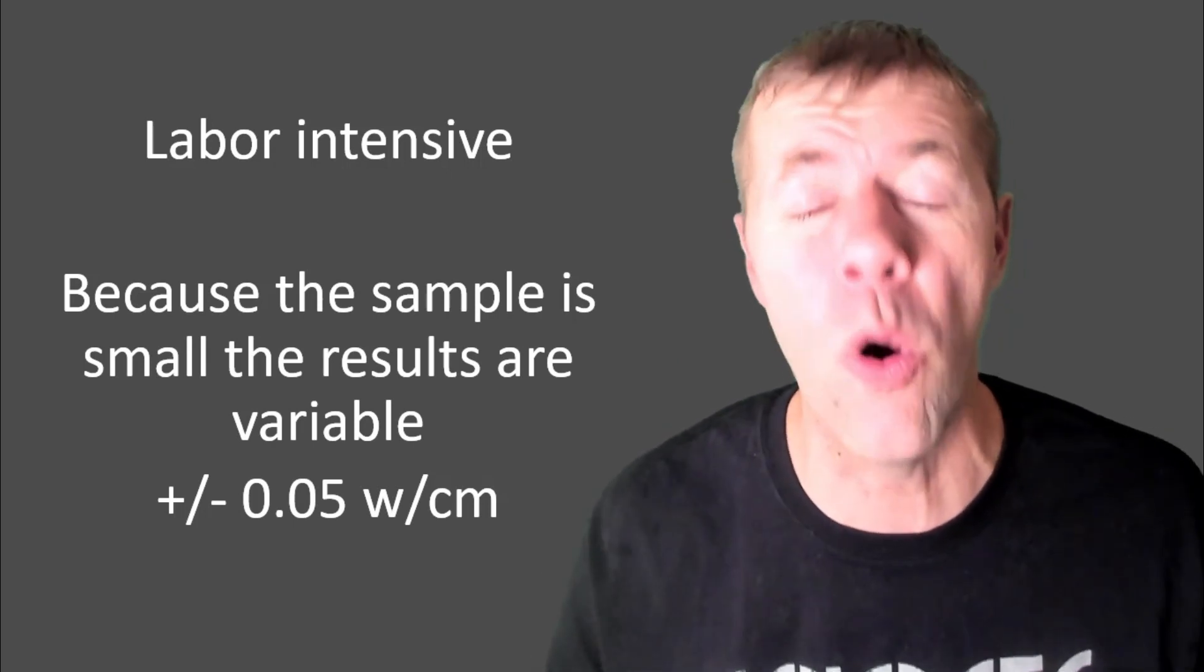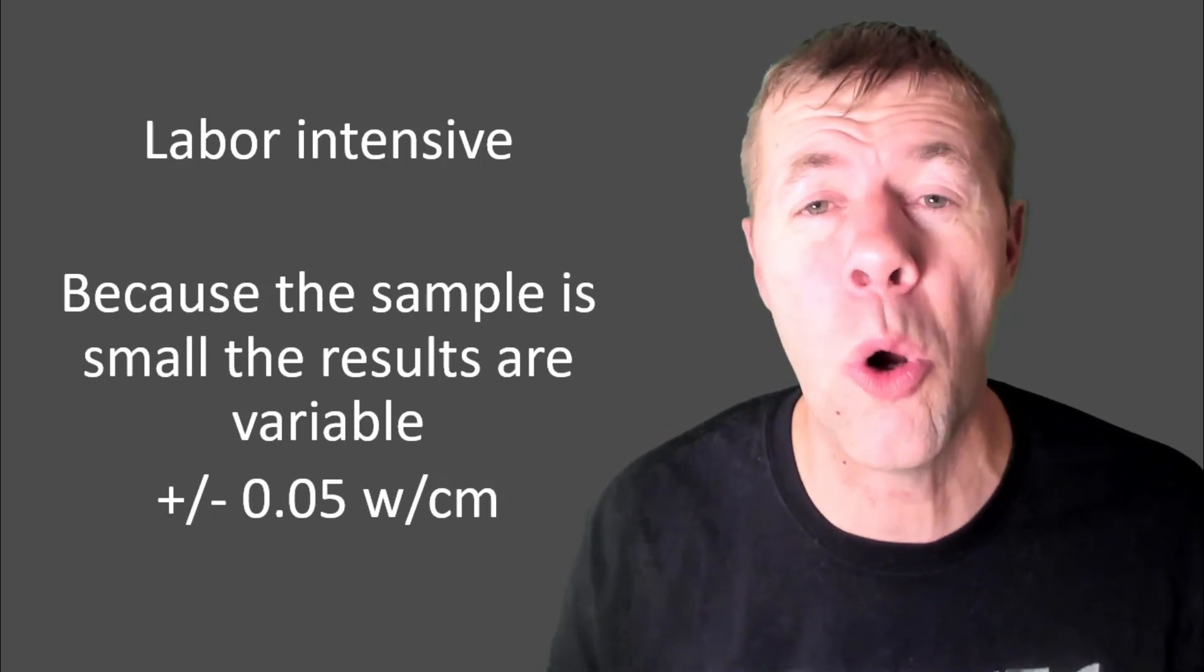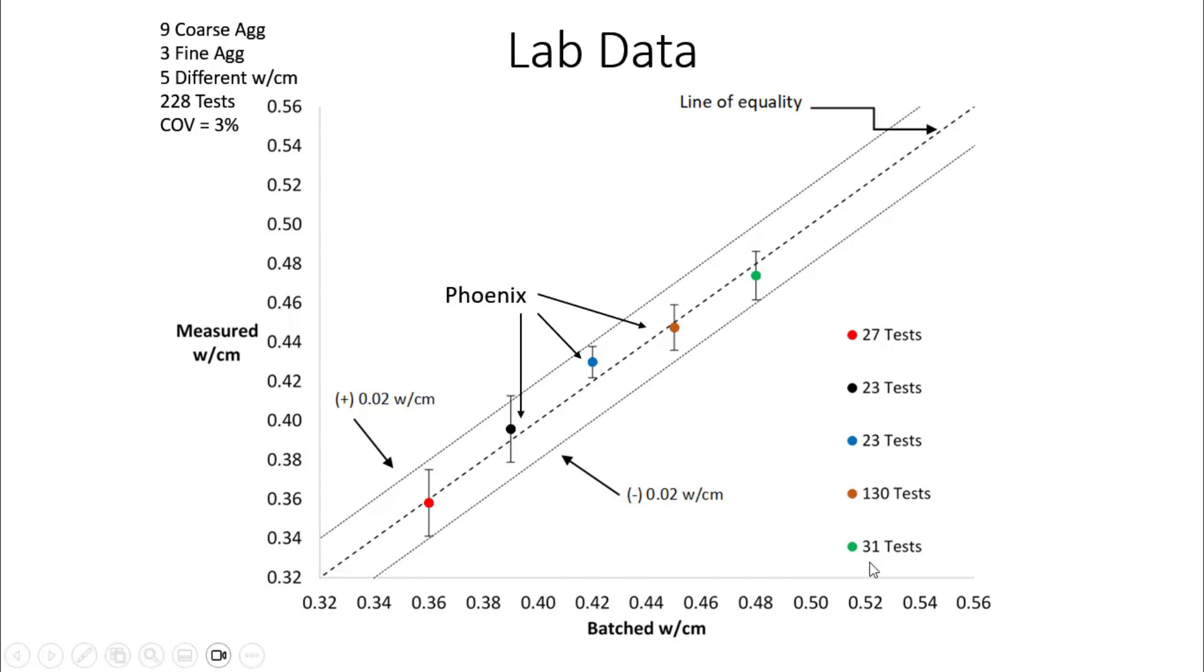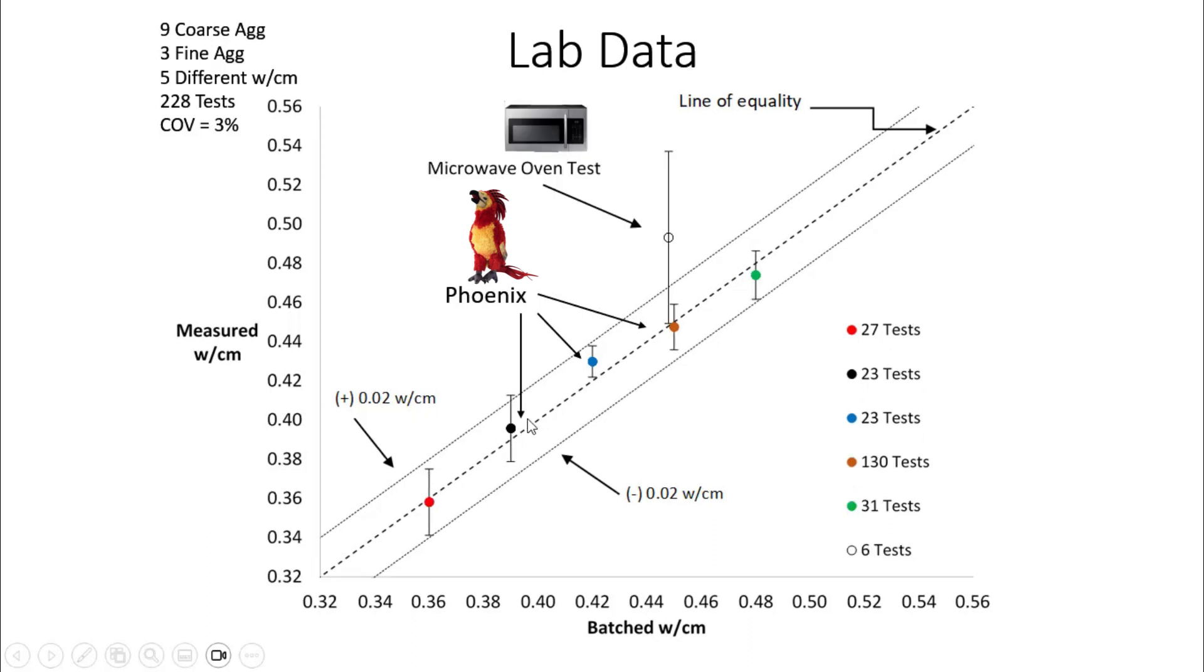Now I'm showing the batched water to cement ratio down here. This is what is supposed to be in the mix. Here is the measured water to cement ratio. This is all laboratory mixtures. This would be perfect agreement, and look at the Phoenix. This is all Phoenix data. Really, really close to that perfect agreement, and then that, yeah, that's the microwave. Not very close and pretty variable. Yeah, the microwave.